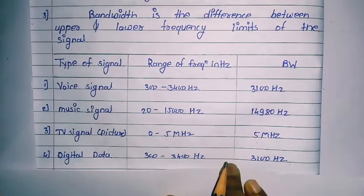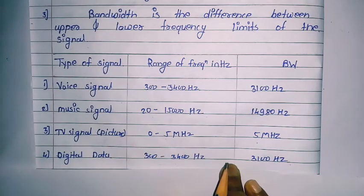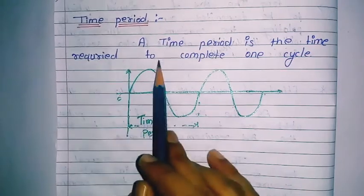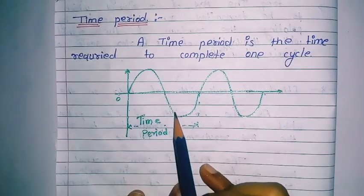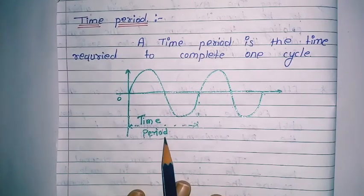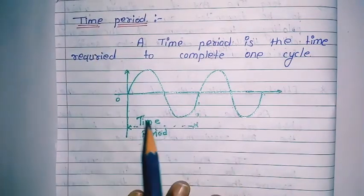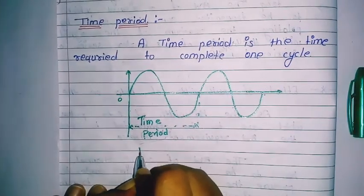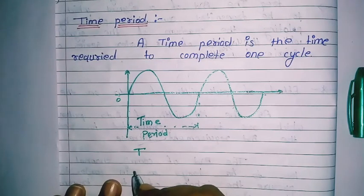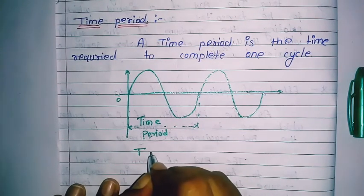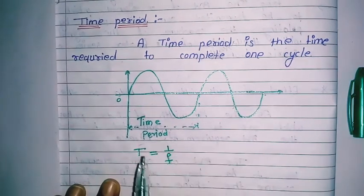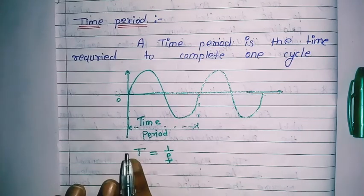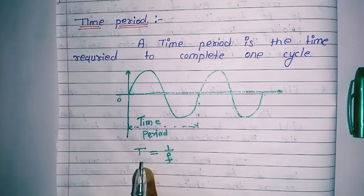Next we will see the definition of time period. A time period is the time required to complete one cycle. Time period is denoted by T, and the formula relating time period and frequency is T equals 1 divided by F. Time is inversely proportional to frequency, and frequency is also inversely proportional to the time period.